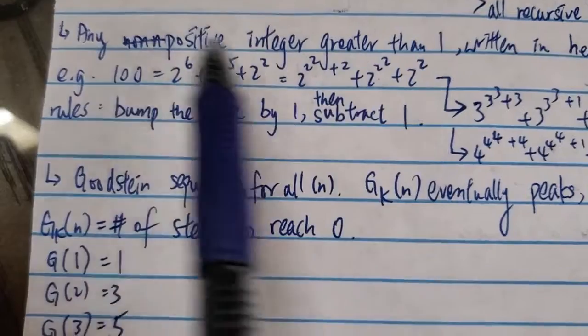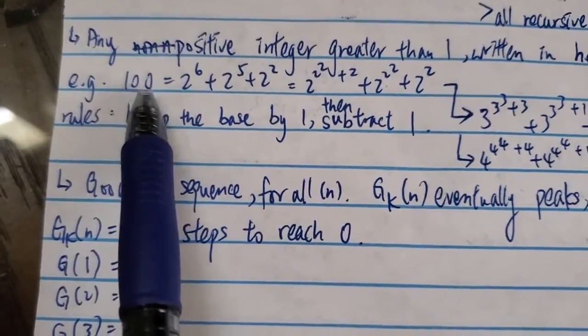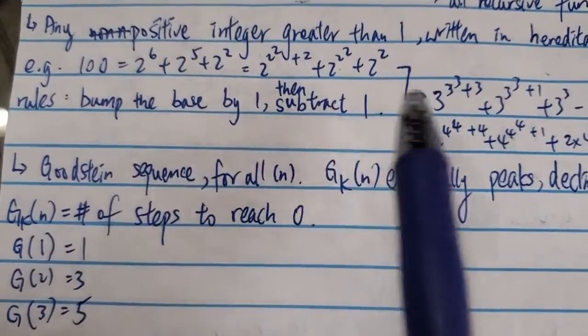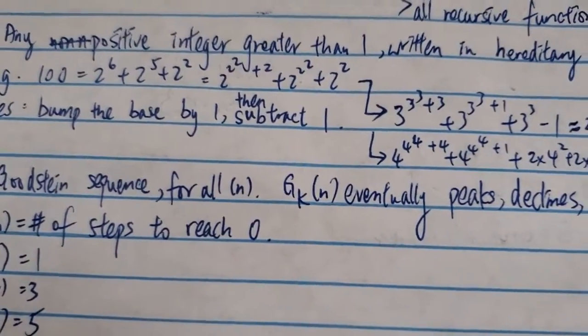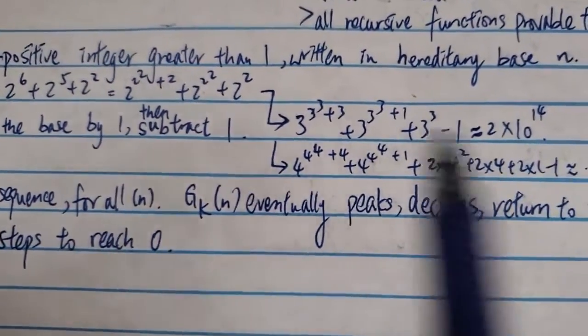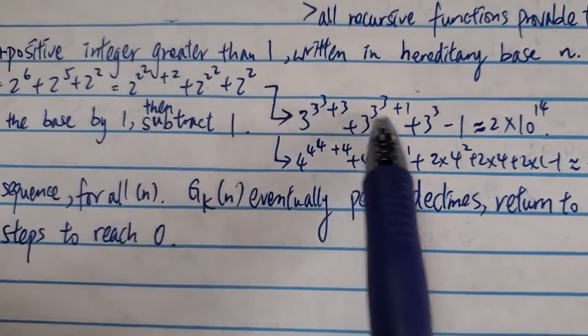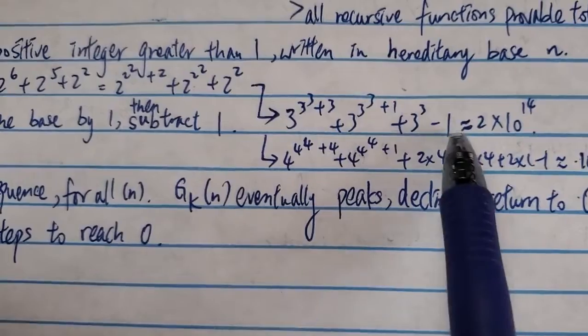And then you pump the base by 1 and then subtract 1 at the end. So basically you turn this thing, the next step would be you turn all the twos to threes and minus 1 at the end.